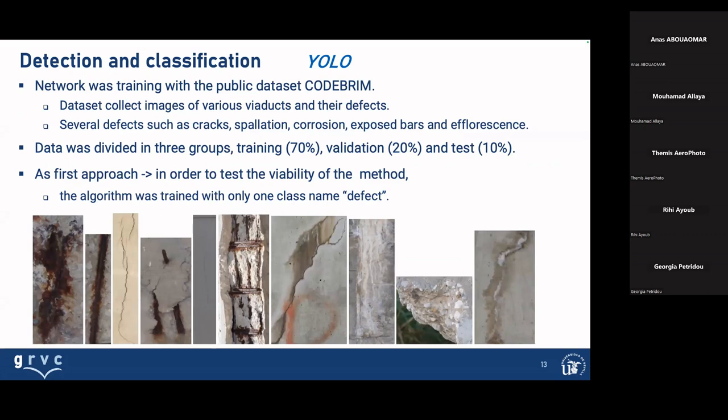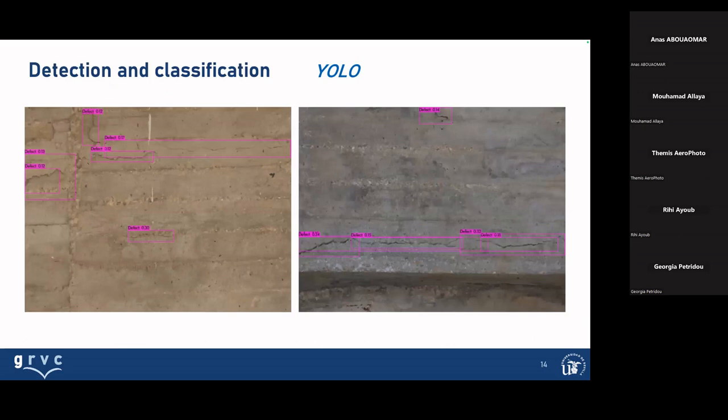We had very few data available, but we tested with the Colibri dataset. The Colibri dataset is obtained from another European project called AIROBI, for bridge defect detection by contact inspection. We used the dataset collected from various viaducts with defects — several defect types such as crack, spallation, corrosion, exposed bar, and efflorescence. The data was divided into three groups for training, validation, and test. As a first approach to test the ability of the method, we trained the algorithm with only one class — the main defect.